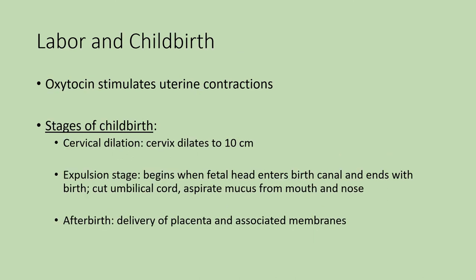With labor and childbirth, oxytocin is a hormone that stimulates uterine contractions. It operates on positive feedback: as oxytocin is released, uterine contractions begin; as contractions get stronger, more oxytocin is released, stimulating stronger and stronger contractions until childbirth occurs. There are three stages of childbirth. The first is the cervical dilation stage, where the cervix must dilate to allow for childbirth.